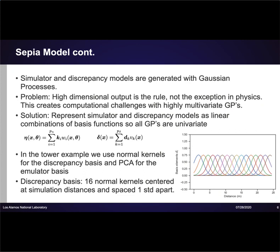Sepia will approximate eta and delta with Gaussian processes, a type of statistical regression method. But we have a computational problem to deal with first. High-dimensional output is usually the rule, not the exception, in complex physics problems. This creates computational challenges with Gaussian process. We get around this by using a basis representation for both emulator and discrepancy. By using principal components, we reduce our problem to a mixture of univariate Gaussian processes, which is computationally feasible for a reasonable number of principal components. In our example, we will use principal component analysis for the emulator basis, and normal kernel basis vectors for the discrepancy. Normal kernels are nice because they provide a good tradeoff between smoothness and flexibility. Plotted here in the lower right is the discrepancy basis before weights are calculated. We have 16 normal kernels centered at equally spaced distances between 0 and 25 meters, with standard deviation equal to the distance between them.